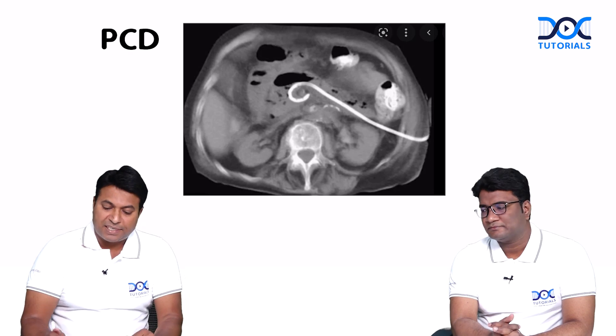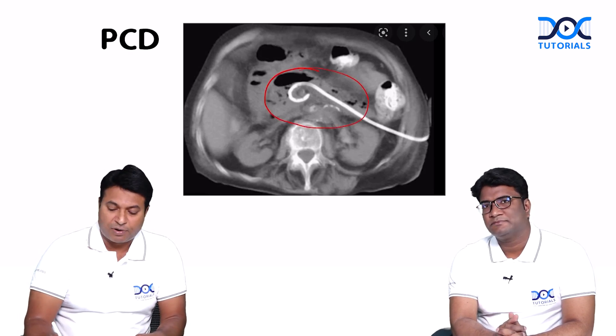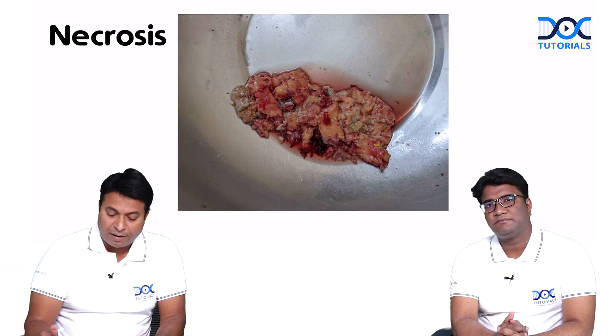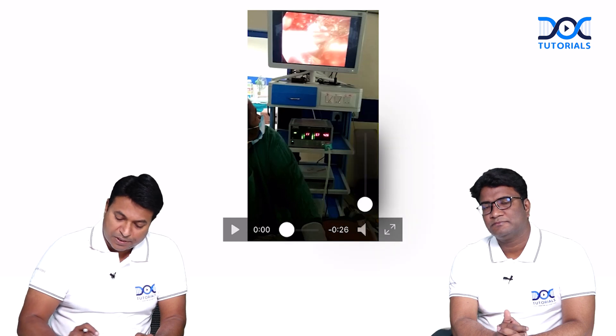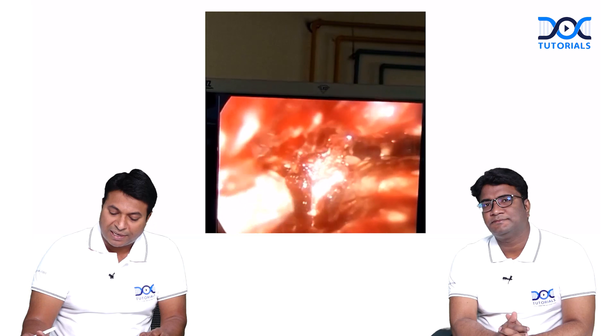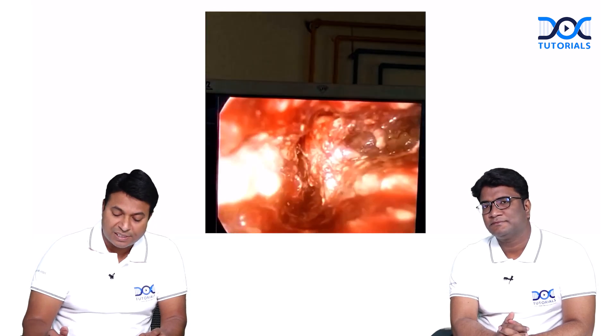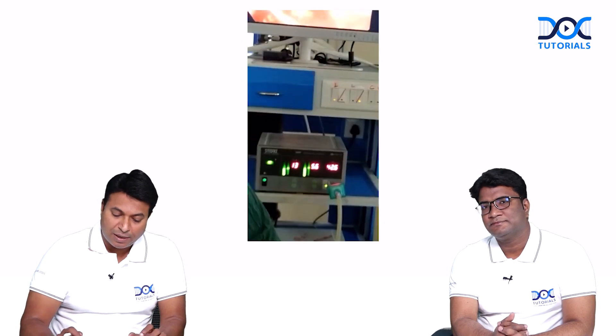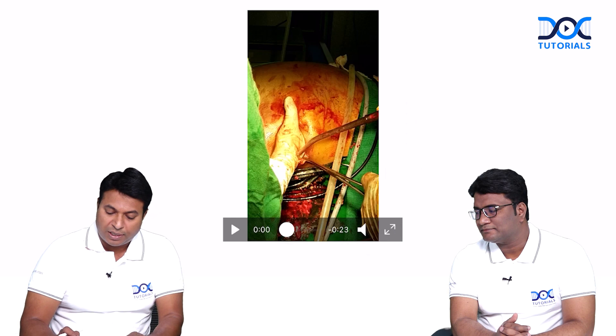These images show a PCD done for pancreatic necrosis by the radiologist — step one — but it will not completely remove all necrotic material, so we proceed to necrosectomy. This video shows necrosectomy being done by VARD — Video Assisted Retroperitoneal Debridement. You can see we are removing the necrotic pancreas very carefully to avoid injury to major vessels, removing only the dead tissues that come freely. We open the posterior abdominal wall, go directly inside, suction out all pus and necrotic materials, and keep a drain for washing the necrosis.